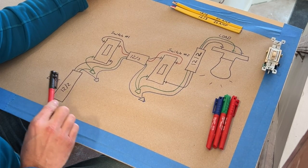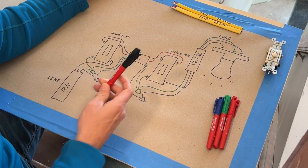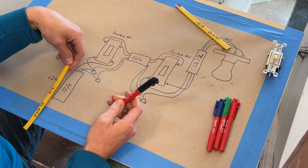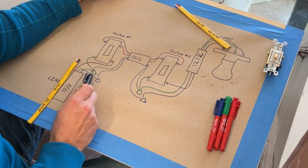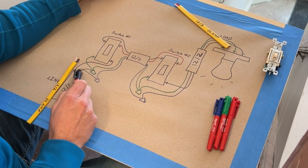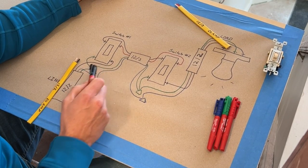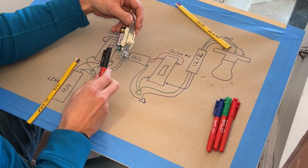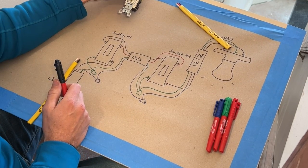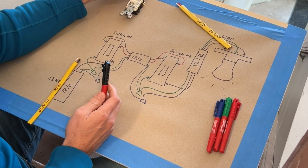We'll start off here on the line side. We'd have a 12-2 wire coming in. We would be passing our neutral through and also passing our ground through, but taking a pigtail out to our switch. So we'd be pigtailing to ground the switch itself.